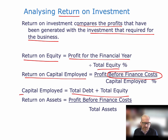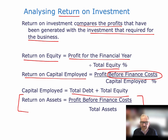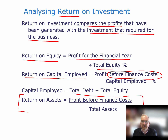And then return on assets. That ratio is profit before finance costs over total assets. You can use whichever measure of profit you want for this; for this module, we'll use profit before finance costs. So those are the three return ratios that you need to be aware of.